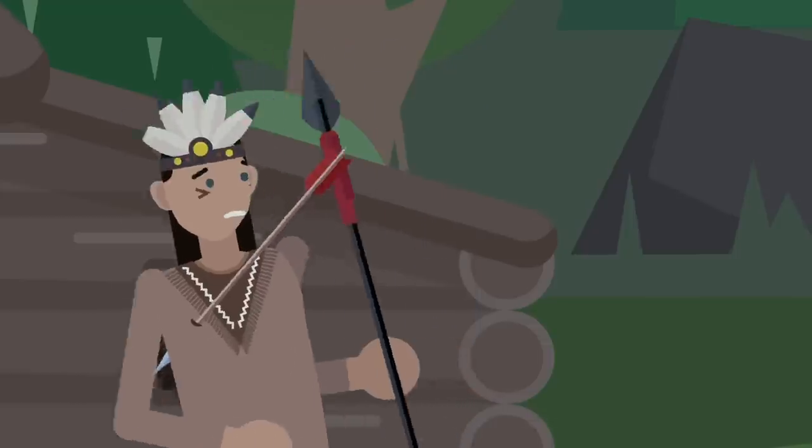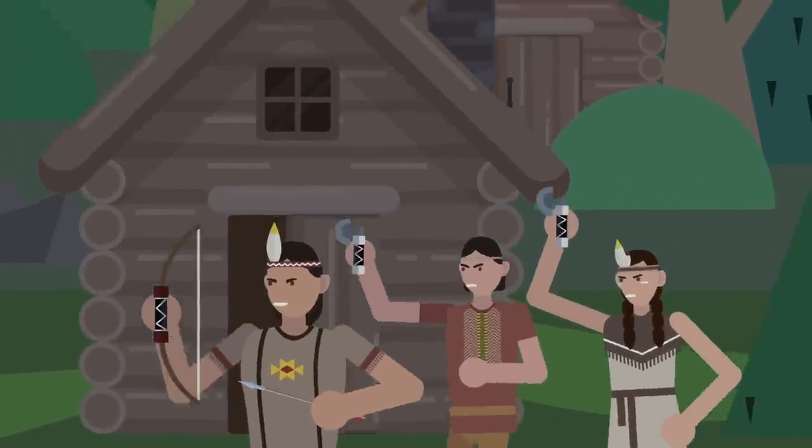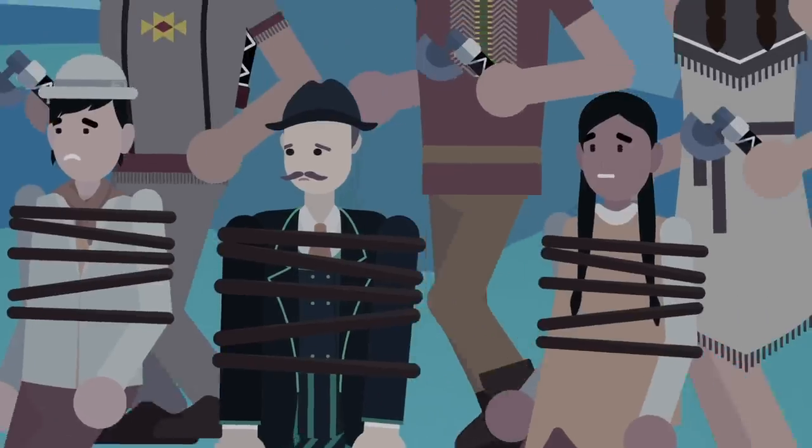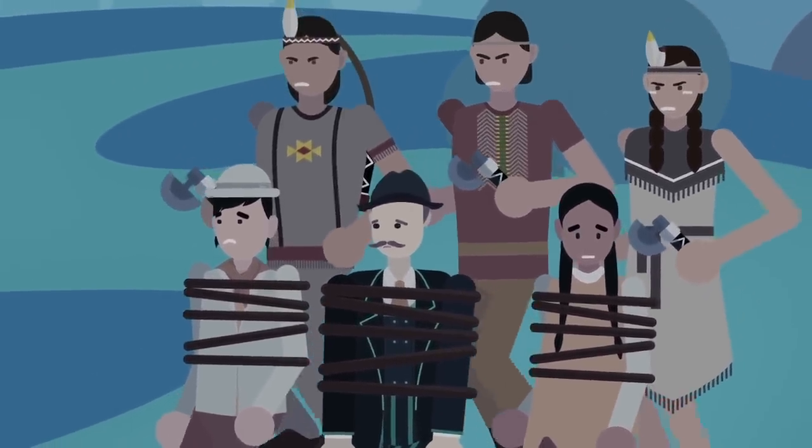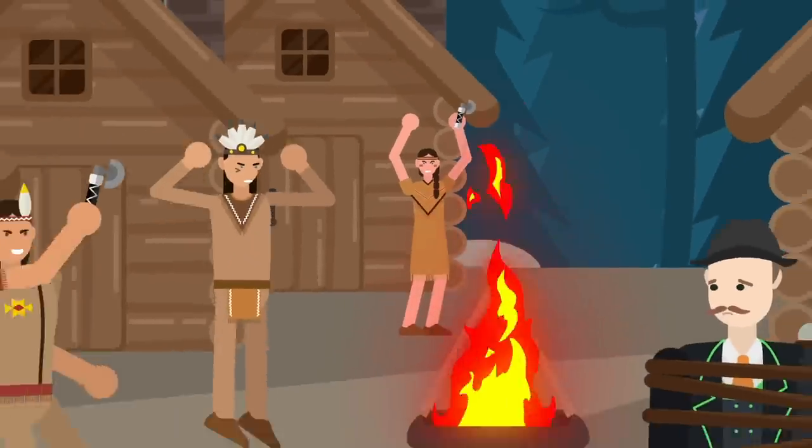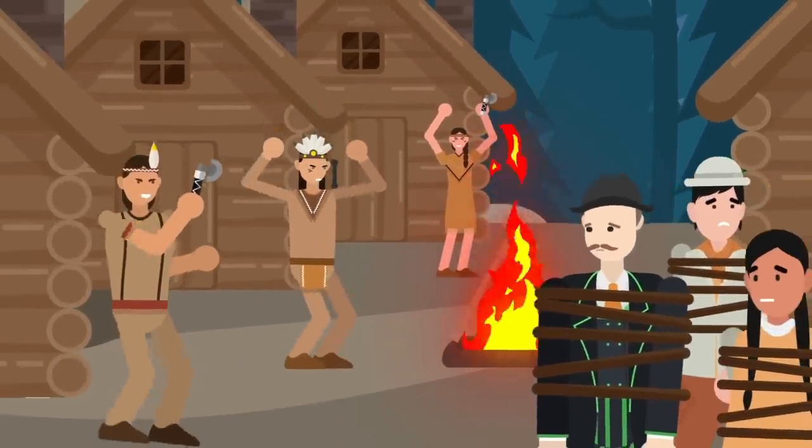However, things took a disastrous turn when the camp was raided by a rival tribe. Almost everyone was slaughtered in the process, and Lord Blackwood and his two companions were hauled away by the enemy tribe for a sinister purpose, sacrifice to a violent local deity.